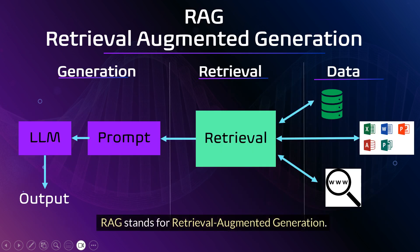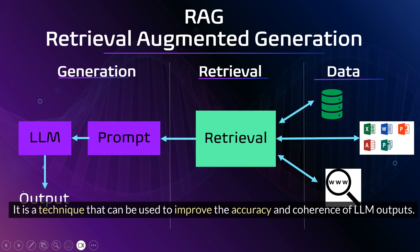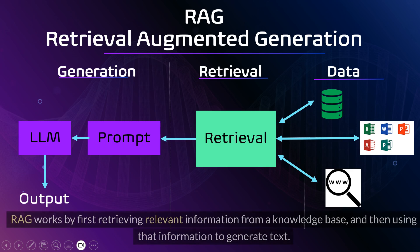RAG stands for retrieval augmented generation. It is a technique that can be used to improve the accuracy and coherence of LLM outputs. RAG works by first retrieving relevant information from a knowledge base and then using that information to generate text.